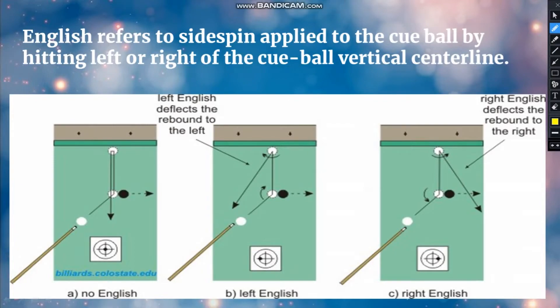English refers to the side spin applied to the cue ball by hitting left or right of the cue ball's vertical center line. If the ball gets side spin and turns towards right, then it's called right English. If the ball gets side spin and turns towards left, then it's called left English.